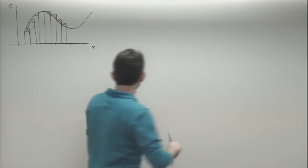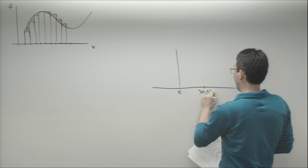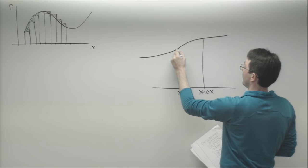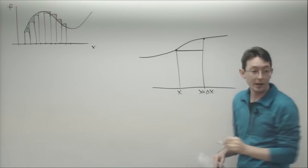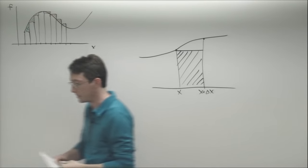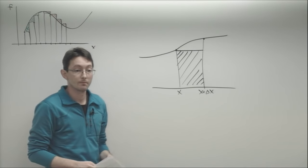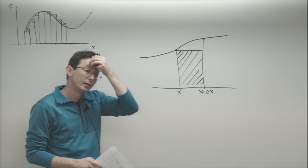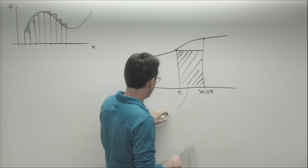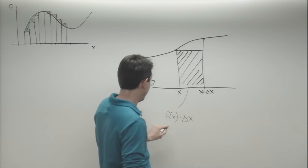So let's zoom in to one of these rectangles. We're in this interval x to x plus delta x. We have some function passing through these two points, and my rectangle rule is approximating the area with this rectangular area. My left rectangle approximation is: area equals f of x times delta x.